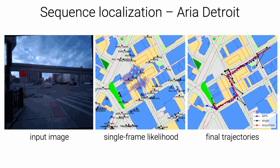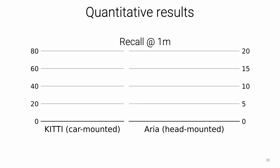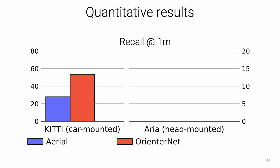We perform an extensive quantitative evaluation with both KITTI and Aria datasets. Here, we plot the ratio of images that are successfully localized within one meter of error. On KITTI, localizing with semantic maps significantly improves over existing approaches based on aerial imagery, in which many ground features are not visible. On Aria data, our network is more accurate than GPS. The performance remains low, but fusing sequences increases the recall by a large amount. Such additional information does not benefit the GPS. Check out our paper for additional results.